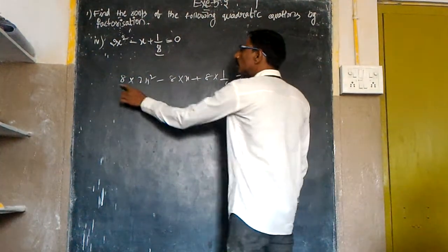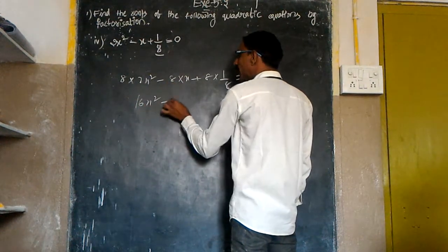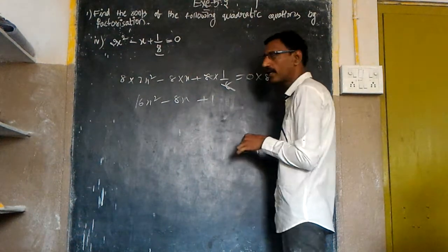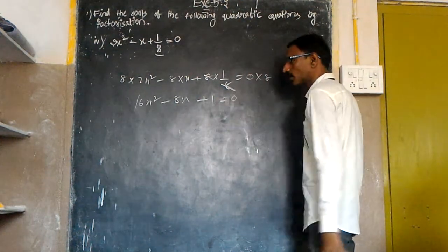By multiplying 8 on both sides we get 8 into 2x square minus 8 into x plus 8 into 1/8 is equal to 0 into 8. You are multiplying 8 on both sides to eliminate the denominator. Then 2 times 8 is 16x square minus 8x, the 8s cancel and we get 1 here and that is equal to 0.